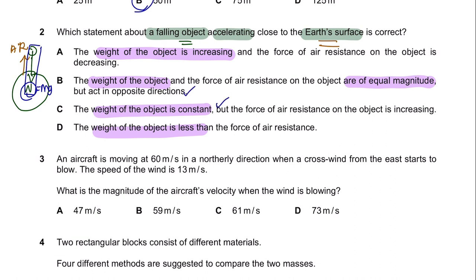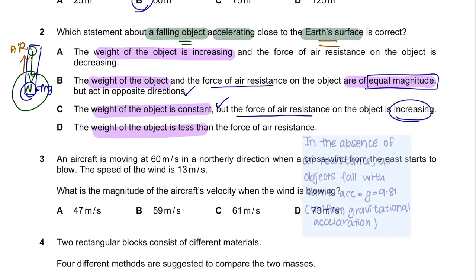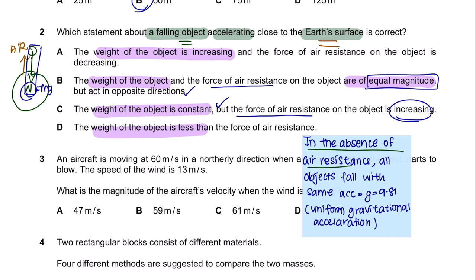In B, it says the weight of the object and the force of air resistance are of equal magnitude. In C, it says the force of air resistance on the object is increasing. Remember that in the absence of air resistance, all objects fall with the same gravitational acceleration. But since it is close to Earth's surface, there is air resistance, so the force of air resistance will increase as the object falls. So the answer is C.